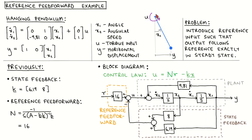The input U is the torque applied to the pivot point. The first state x1 is the pendulum angle, the second state x2 is the angular velocity, and the output y is the horizontal displacement of the pendulum tip. The state variable model linearized at an angle of zero is shown on the left.